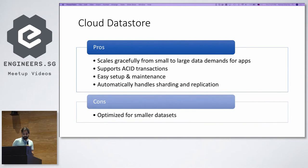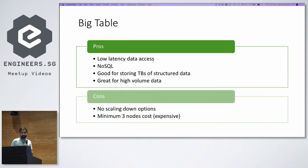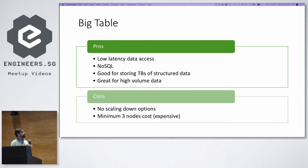Cloud Datastore scales gracefully from small to growing applications and is good for websites, apps, and mobile apps with decent read and write capabilities. But it's still optimized for smaller data sets, and we needed something for even bigger data volumes. Bigtable could have been a good solution — it provides much lower latency than other databases, even lower than some AWS solutions. It's NoSQL, good for storing terabytes of structured data and great for high-volume data. However, it comes at a cost, with no scaling-down options and a minimum of three nodes required.